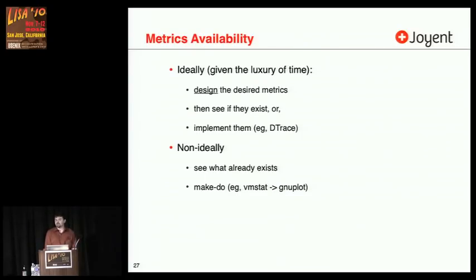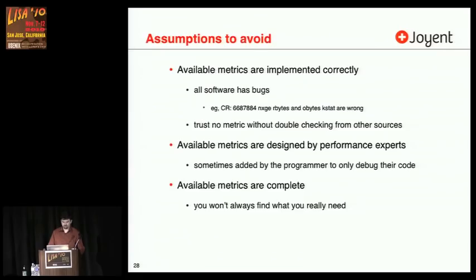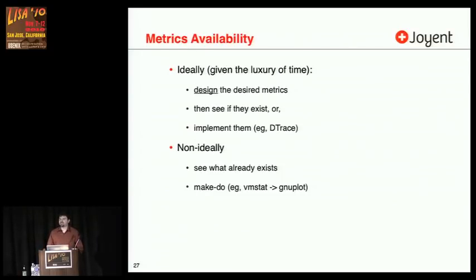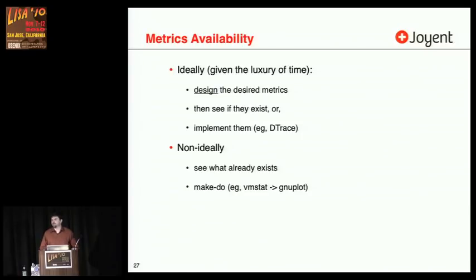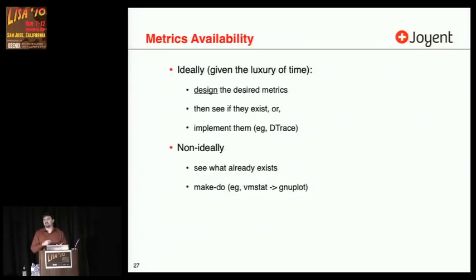Non-ideally, we would see what already exists and then go and make do — taking the output of vmstat and then plotting it with gnuplot or whatever. Don't assume that available metrics are implemented correctly. I've run into a lot of issues over time with kernel statistics that had bugs — you're already using these metrics to analyze a complicated environment, and the metrics themselves are wrong. DTrace does change the game quite a lot there, because with DTrace you can design and then implement any metrics that you actually need, whether provided or not.